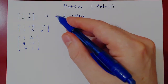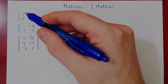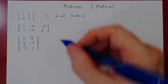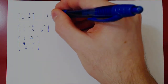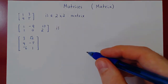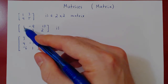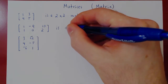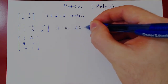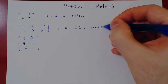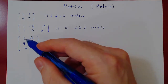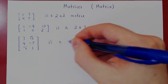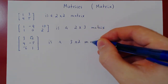The first index always represents the number of rows, and the second index represents the number of columns. The second matrix consists of 2 rows and 3 columns, so it is a 2 by 3 matrix. The third matrix consists of 3 rows and 2 columns, so it is a 3 by 2 matrix.